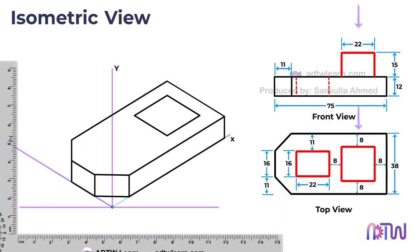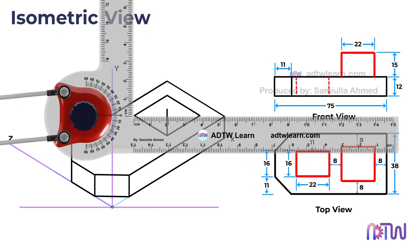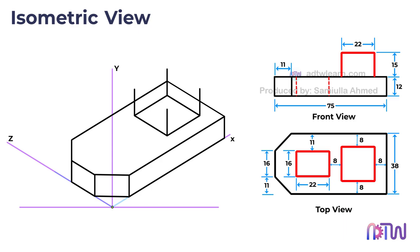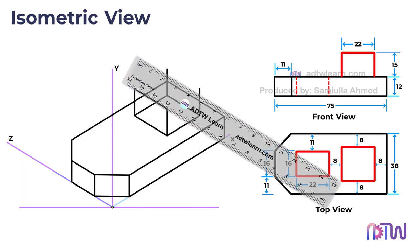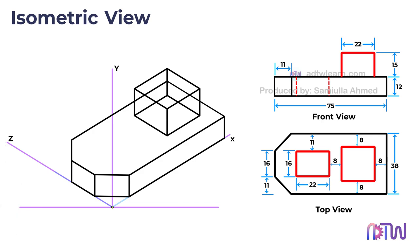This represents the outline of the extruded portion, which has a height of 15 millimeters. Therefore, draw vertical lines of 15 millimeters from each corner point of this square, then connect the endpoints of these vertical lines to construct the square. This gives us the desired appearance. Finally, remove the invisible lines to complete the drawing.